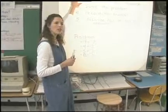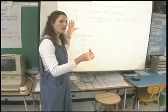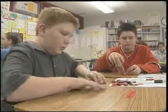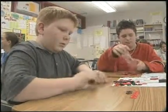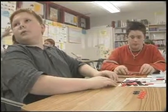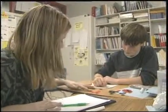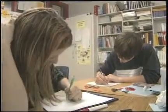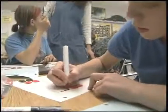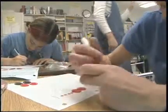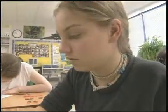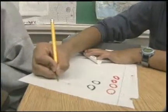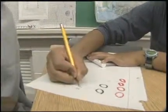Alright guys, these are the steps you need to follow in your groups right now when you're working on this problem. Number one: model the problem with chips — actually set the chips out on your desk and do the problem, like we did on the overhead. Number two: draw it with your red and black marker after you've done it with the chips. Then solve the problem, put the answer on your paper, and explain in just one brief sentence how you got your answer.